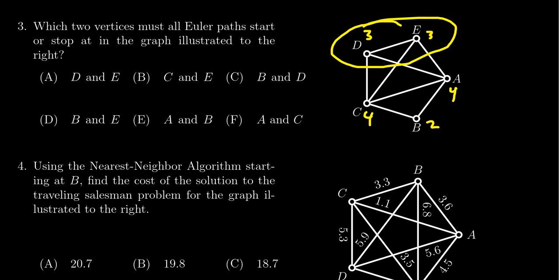Therefore, the Euler path must either start or stop at D and E, which actually happens to be the first option here, choice A. So A is the correct answer.